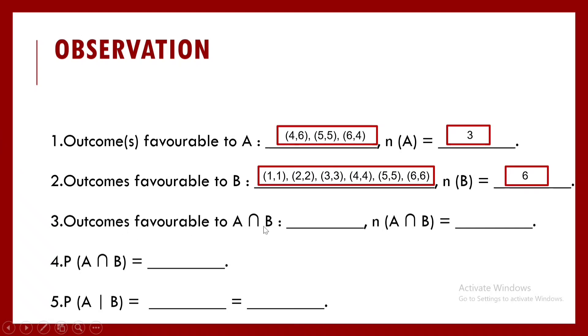Outcomes favorable to A intersection B are 5,5, and obviously N of A intersection B, the cardinal number is 1. So P of A intersection B is 1 out of 36. Conditional probability comes out to be, if you remember, it was the probability of A intersection B upon probability of getting B. That means P(A ∩ B) upon P(B). So which comes out to be 1 by 36 divided by 1 by 6, which is equal to 1 by 6. This is all for the observation.